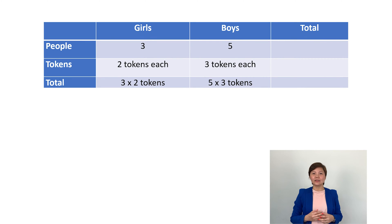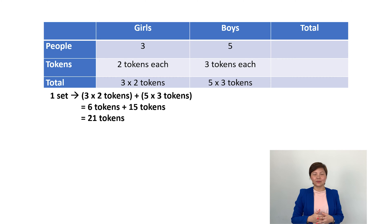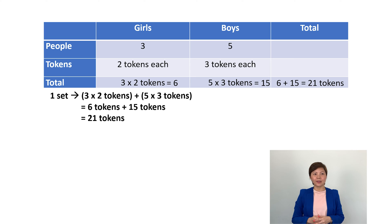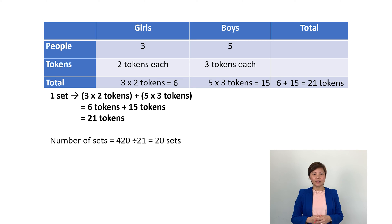Now that all the information is filled out, let's take a look at what makes one set. One set is made up of 3 girls and 5 boys. So quantity times value means you take 3 girls multiplied by the number of tokens given to the girls, plus 5 boys multiplied by the number of tokens given to the boys. This gives a total of 21 tokens. One set is a total of 21 tokens. Take 420 divided by 21, which gives you the answer 20 — this represents 20 sets.